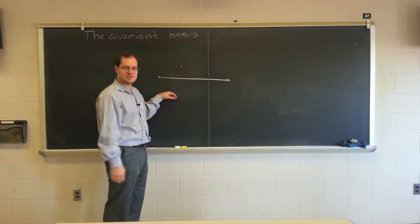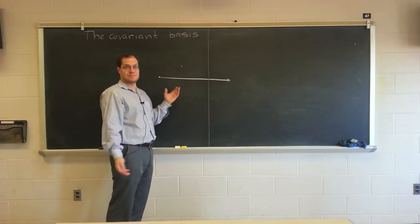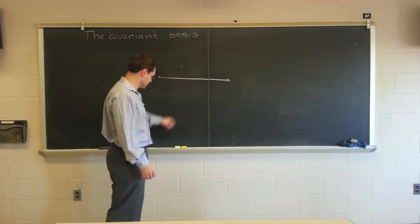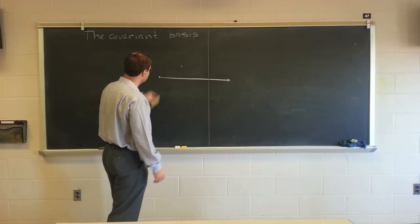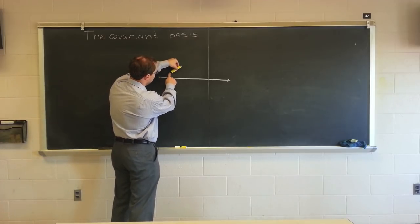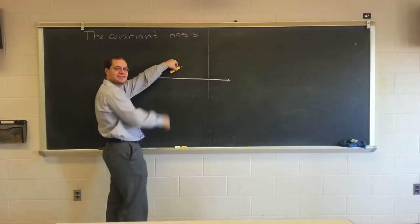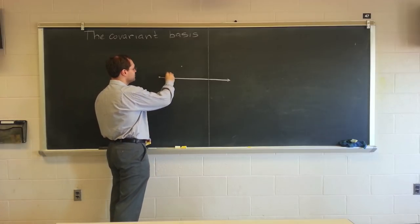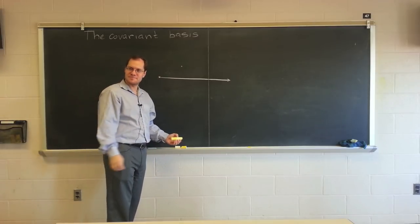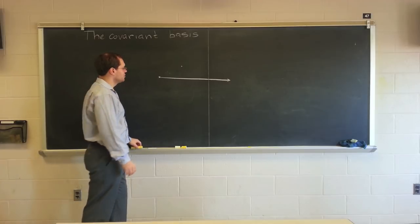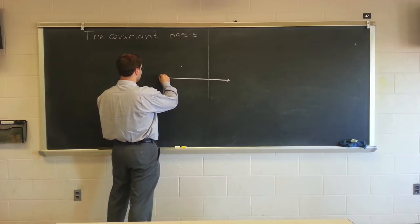If you count it in the clockwise direction, it'll be a different coordinate system. So the coordinates of this point are 2.1 and pi over 6. That's the coordinates of this point. So again, you draw coordinate lines. The coordinate lines look like this.